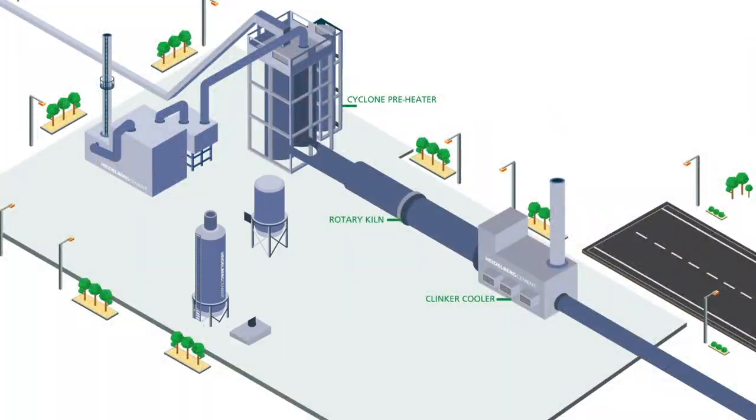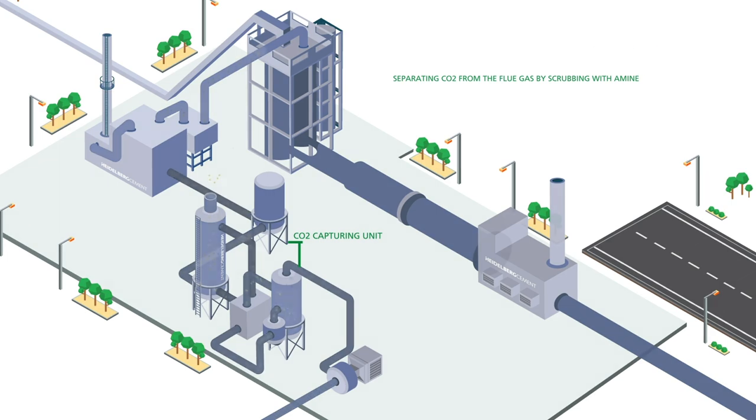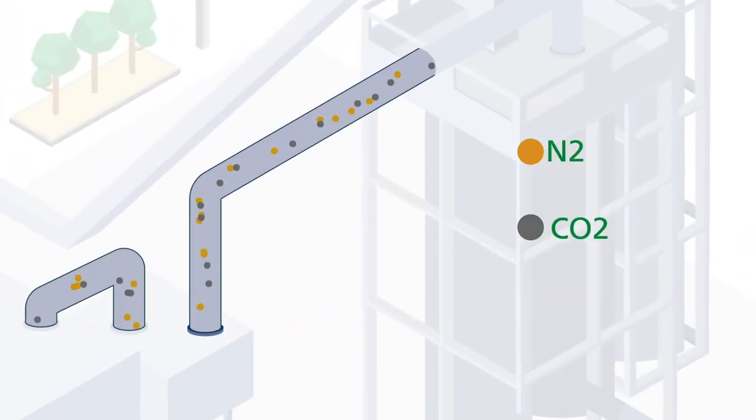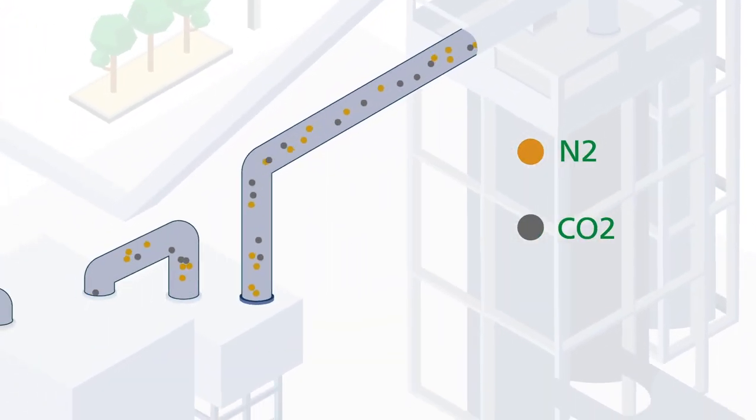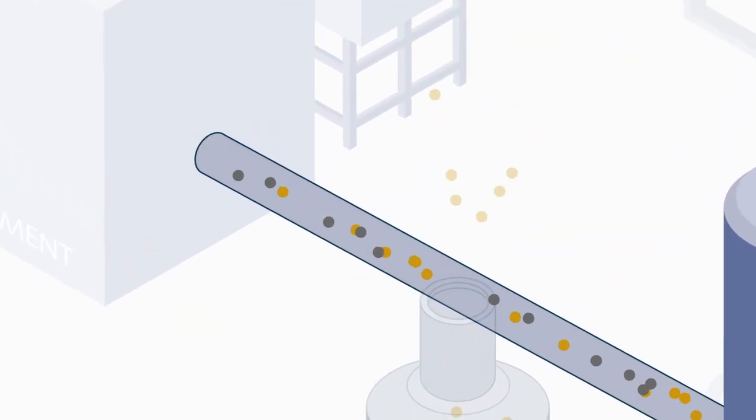One technology focuses on capturing the CO2 at the end of the conventional combustion process by installing a CO2 capturing unit. The nitrogen and carbon dioxide, usually released by the process, are redirected to this unit and cooled down.